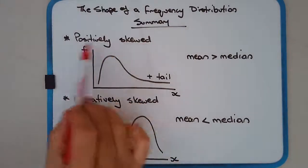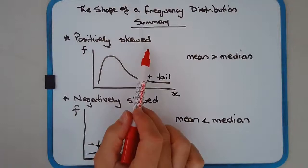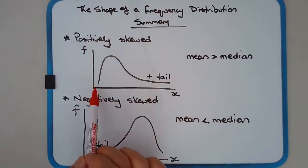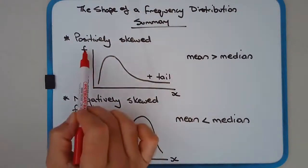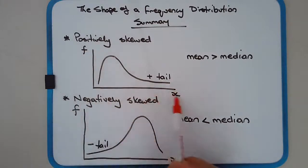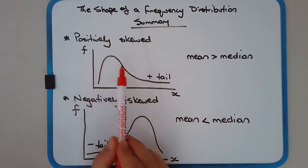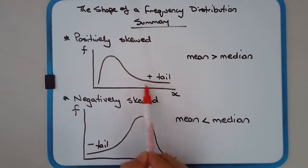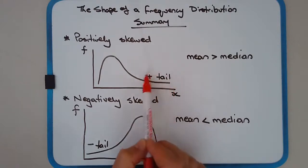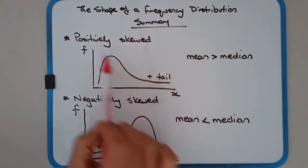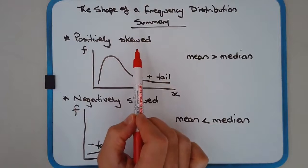So the first type of shape is a positively skewed distribution. The y-axis is the frequency column, the x-axis is the score or the scores. And if the bulk of the scores, or most of the scores, are bunched toward the left-hand side, but there might be a few really high values, large values that are on the right-hand side or on the positive side, so in other words it's got a positive tail, we call that positively skewed or a positively skewed distribution.